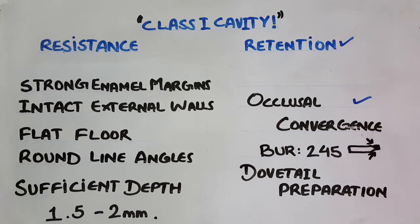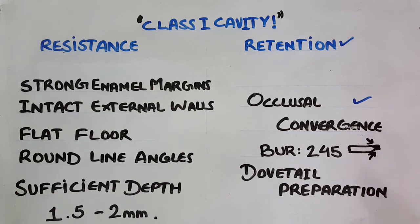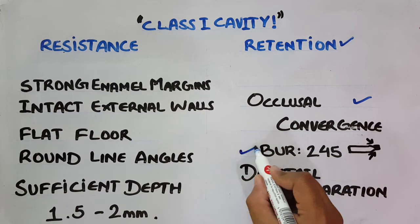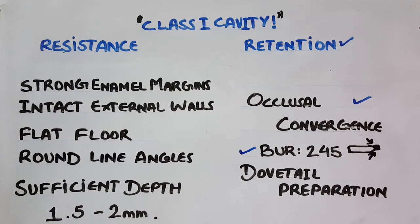The features of retention for a Class 1 cavity include occlusal convergence. Occlusal convergence means that the depth of the cavity should be wider compared to the superficial portion, and the tooth preparation should converge occlusally. This is achieved by the use of a 245 carbide burr, which is specifically used when preparing a tooth for an amalgam filling.